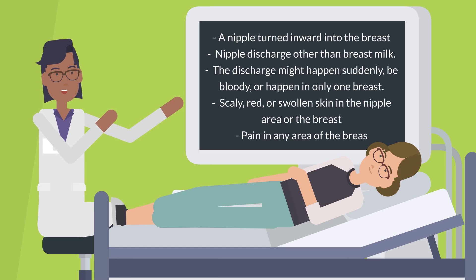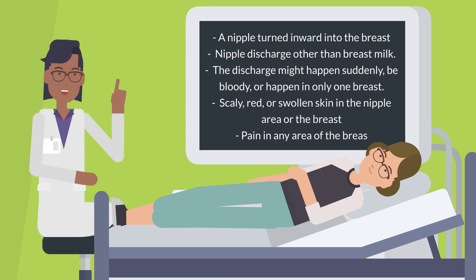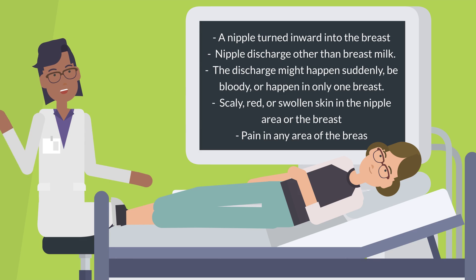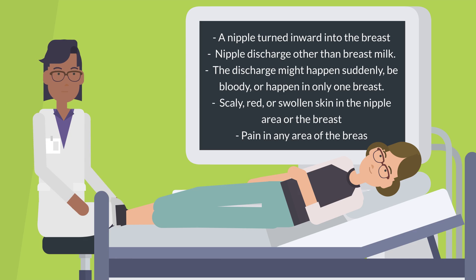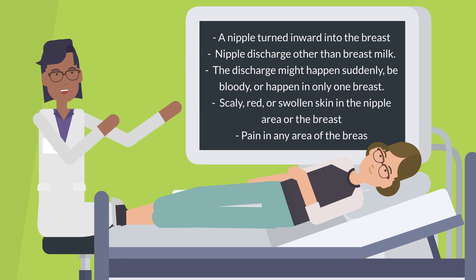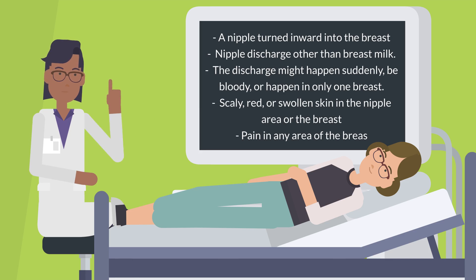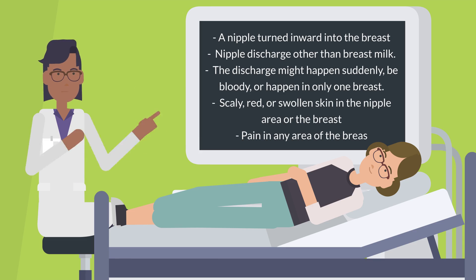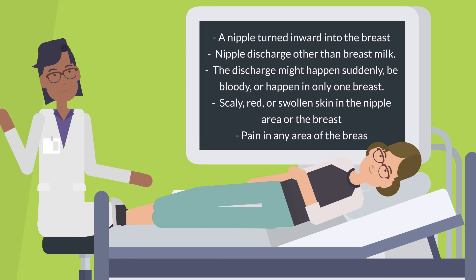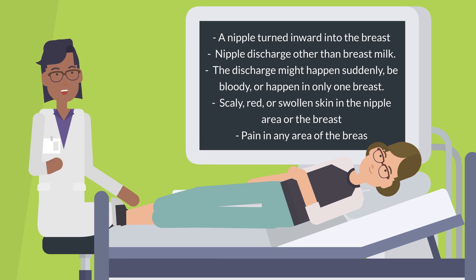Other symptoms include nipple discharge other than breast milk — the discharge might happen suddenly, be bloody, or happen in only one breast — as well as scaly, red, or swollen skin in the nipple area or the breast, or pain in any area of the breast.